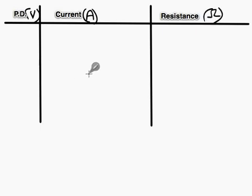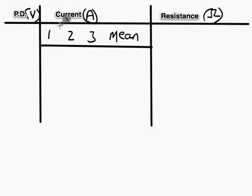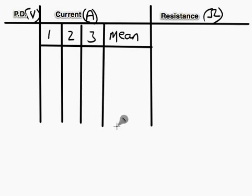Third thing to think about is, have you got room in your table to take repeat measurements? In this case, we're varying the potential difference, we're measuring the current, and I'm calculating the resistance. So I need to show repeat readings for my current measurement. And I can do that by adding spaces and columns for three repeats, and then a mean column to show that I'm calculating the mean of those values that I'll then use to go on and calculate the resistance.